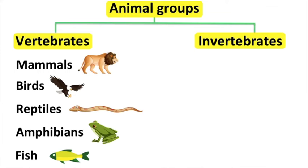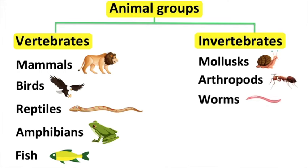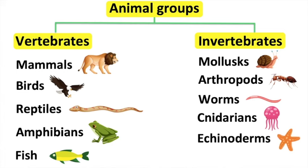There are also different types of invertebrates which we can put into groups — for example, invertebrates with six legs, invertebrates with more than six legs, and invertebrates without legs. There are many different types of mollusks. Some have shells for protection and others don't — for example, snails, squid, and oysters.